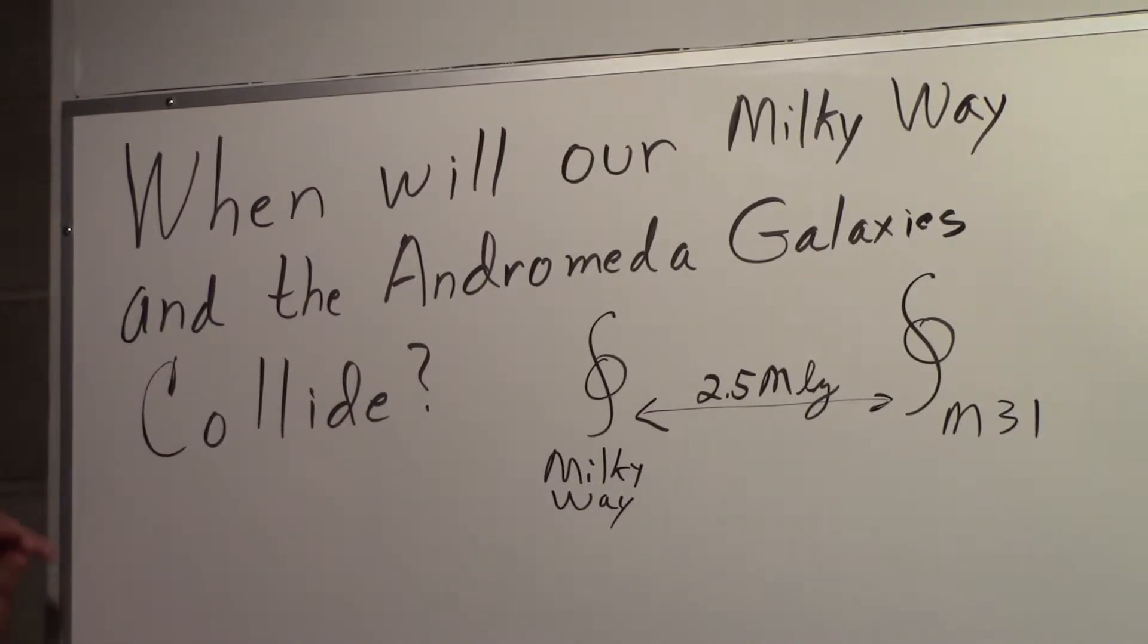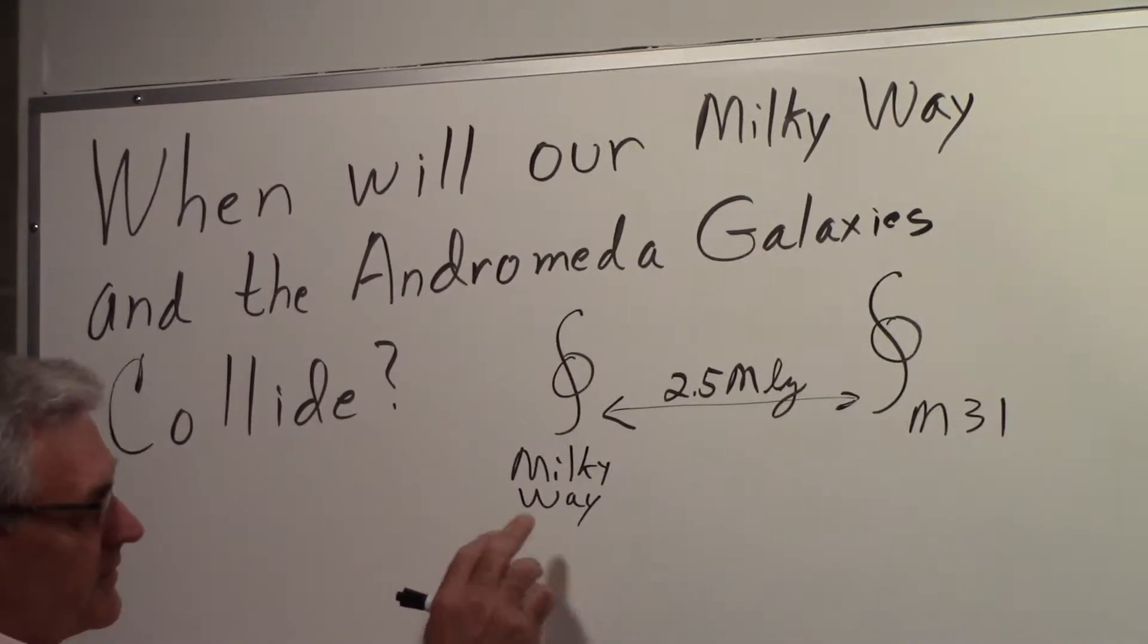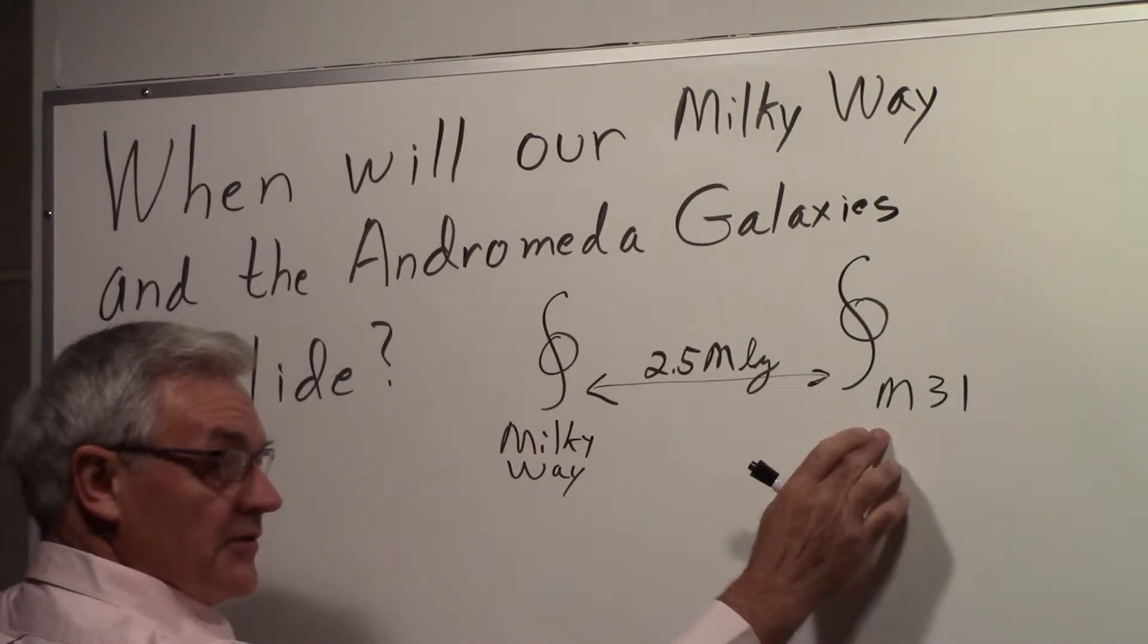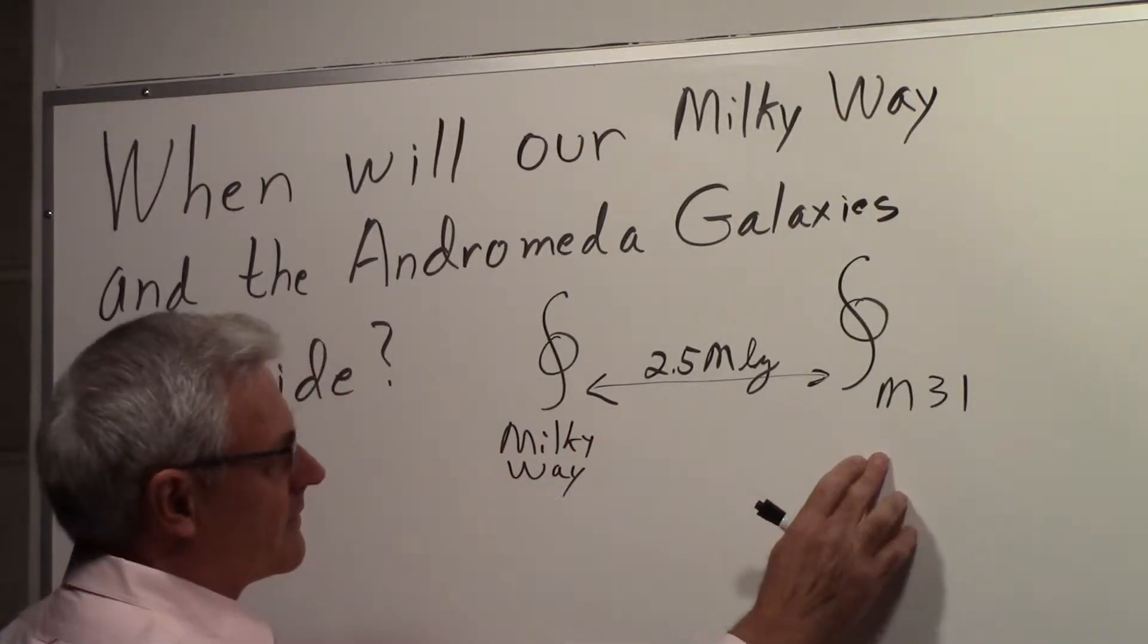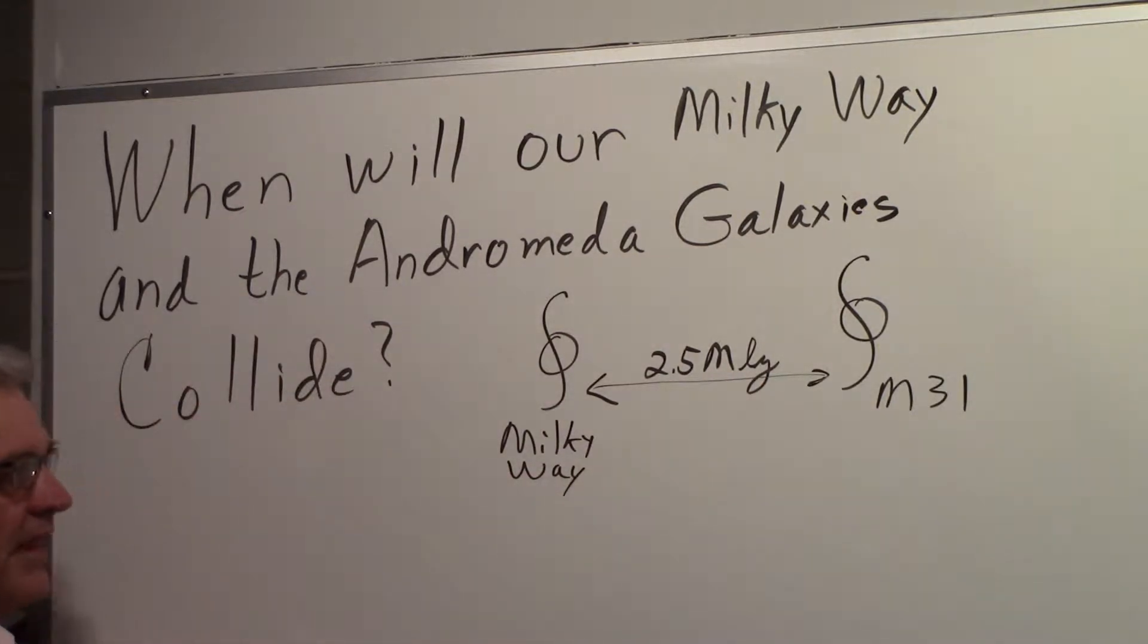I want to look at this question: When will our Milky Way and the Andromeda galaxies collide? Here is an extremely rough sketch. Here's our Milky Way. Here's the Andromeda galaxy, also known as M31. They're spaced approximately two and a half million light-years apart, and the question is when will they collide?